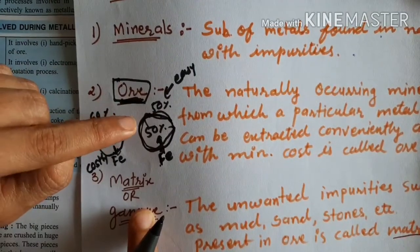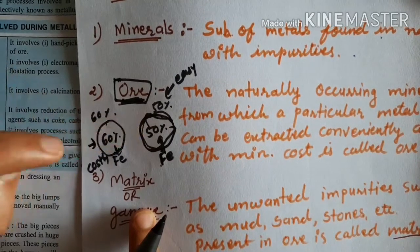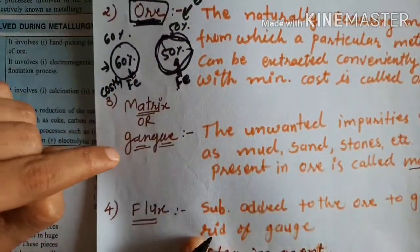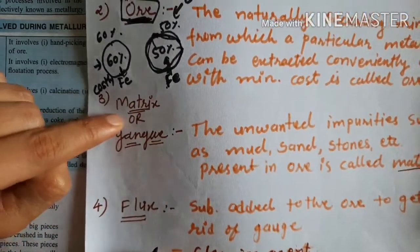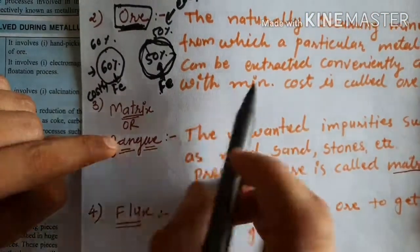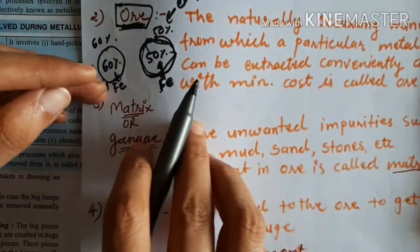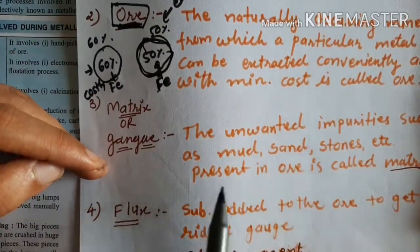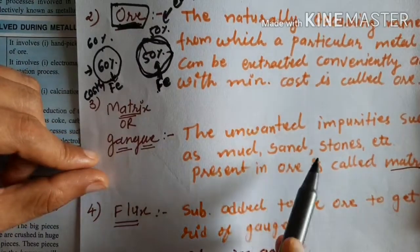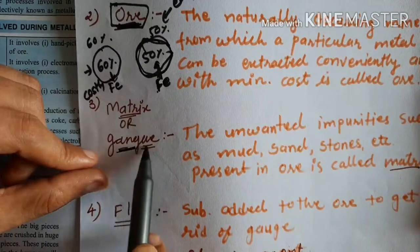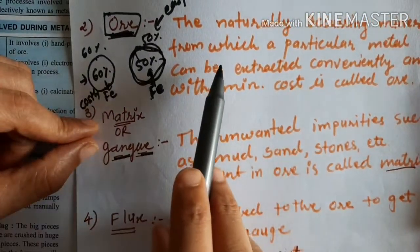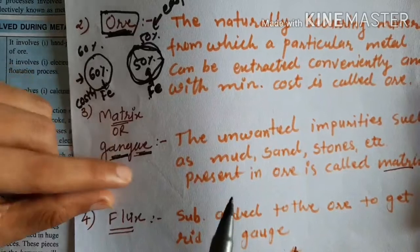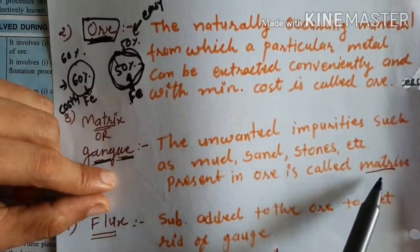From the minerals, a particular mineral is chosen from which we can find the metal in the easiest way at minimum cost. The next important term is 'matrix' or 'gang.' During the extraction or purification of the ore, the unwanted impurity present in it is called matrix or gang. Both terms mean the same thing.